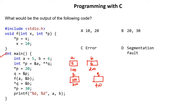Now we do *P = 20. P contains 100, so pointer P means we go to address 100 and move inside. Dereferencing gives the value at that address. So we go to address 100 and change the value from 5 to 20. This value of A is now updated to 20.